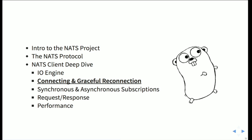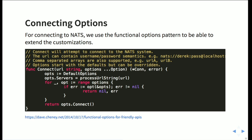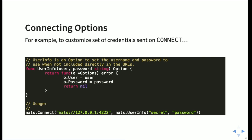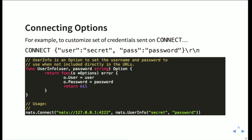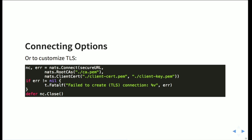Next, I want to cover connecting and graceful reconnection capabilities. For customizing the NATS connection, we use the popular functional options pattern — as described in Dave Chaney's blog post — which is very useful for keeping the API simple while continuing to extend client features. It takes a variadic number of options, so you can use it to, for example, set credentials to be sent by the client on connect, passing user info in the example. We can also customize TLS, setting client certificates or root CAs.